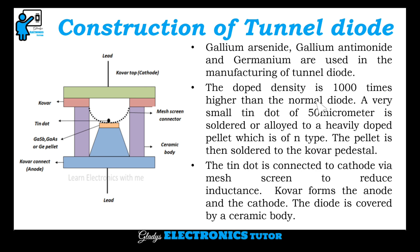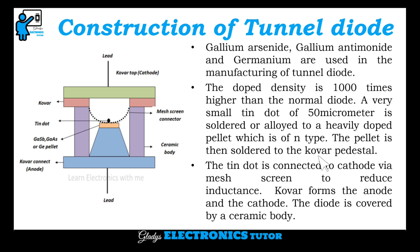The doped density is 1000 times higher than the normal diode. A very small tin dot of 50 micrometers is soldered or alloyed to a heavily doped pellet which is of N type. The pellet is then soldered to a cover pedestal. The tin dot is connected to the cathode via a mesh screen to reduce the inductance. The cover forms the anode and cathode. The diode is covered by a ceramic body.